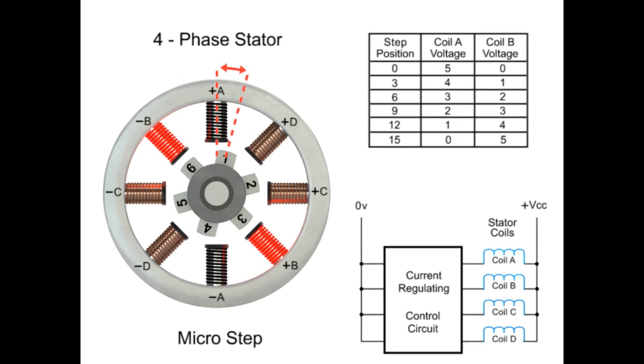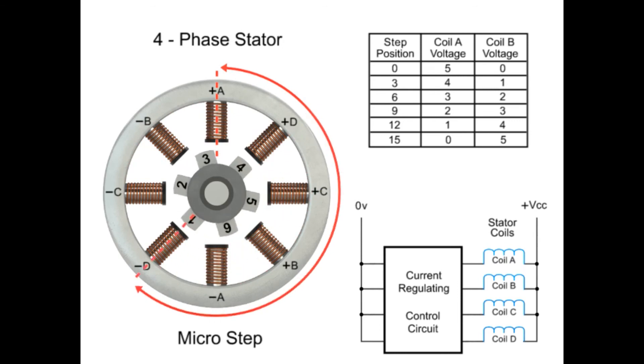This process continues at all coils within the stator to provide accurate positioning. As you can see in this example, 120 steps are required to make a full rotation at 3 degree increments.